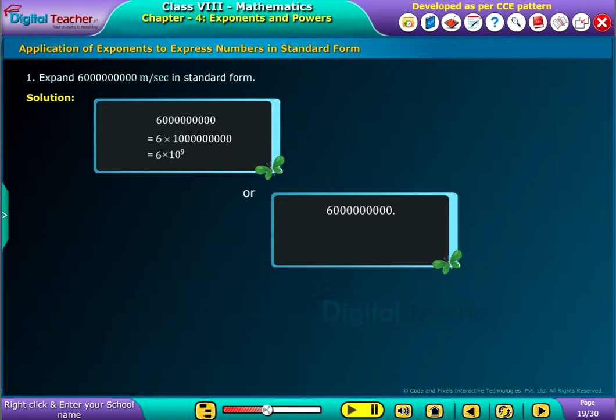Also, we can say that as there is no decimal point in the given number, so we put a decimal point at its right end. Thus, here we conclude that the decimal point is moved 9 places to the left to form a number more than 1 and less than 10.